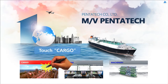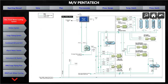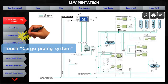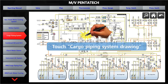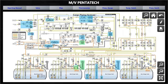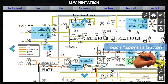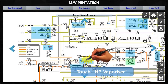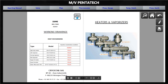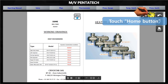To access a vendor manual using system drawings, touch the Cargo button on the category screen. You can see the system index on the left side and the system drawing on the right side. Touch the Cargo Piping System, then touch any place of the drawing on the right side to view the full system drawing. Touch the zoom-in button to select equipment, then select equipment on the system drawing to view its vendor manual. After checking the vendor manual, touch the Home button to return to the category screen.